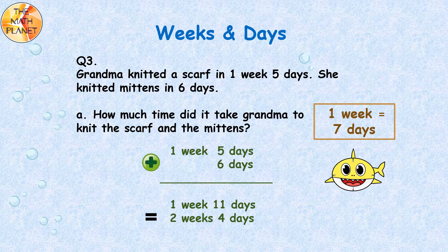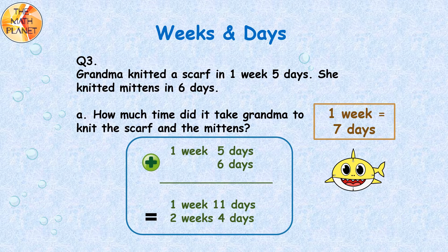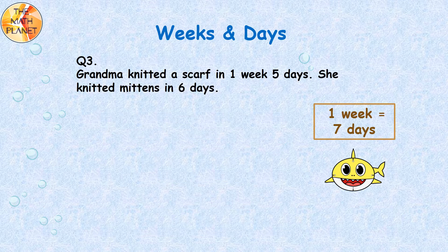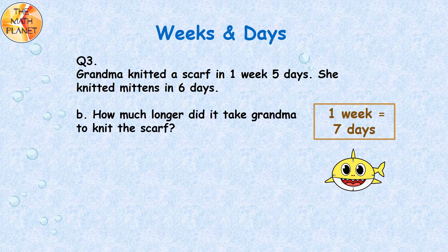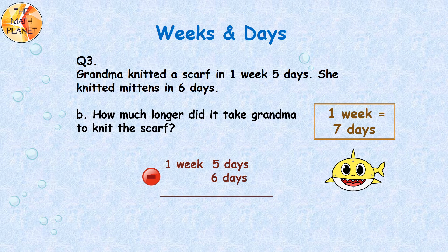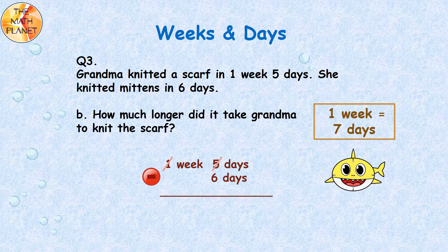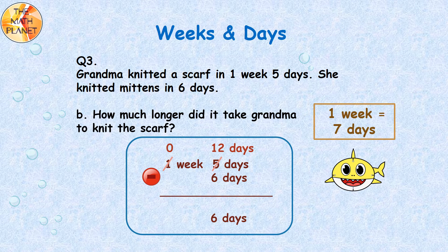Grandma knitted the scarf and the mittens in 2 weeks 4 days. Now let's answer question B. How much longer did it take grandma to knit the scarf? The subtraction equation is 1 week 5 days minus 6 days, and we start subtracting from the days. 5 minus 6 — we cannot take away 6 from 5, so we regroup. We cross the 5 days and cross the 1 week, following the rule 1 week equals 7 days. We will have 0 weeks left and the days will be 5 plus 7 equals 12 days, and the difference is 12 minus 6 equals 6 days. The scarf took 6 more days than the mittens.